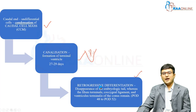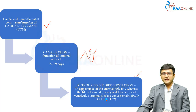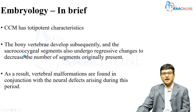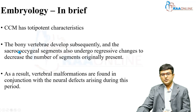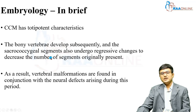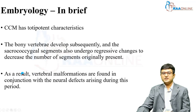The defects in LMMC lie in retrogressive differentiation and whether there is early disjunction of the spinal cord from the skin. The caudal cell mass has totipotent characteristics, and the bony vertebrae — particularly the sacrococcygeal segments — must also undergo regressive changes to reduce the number of segments originally present. When secondary neurulation is affected, vertebral malformations are also found as part of the neural defects.